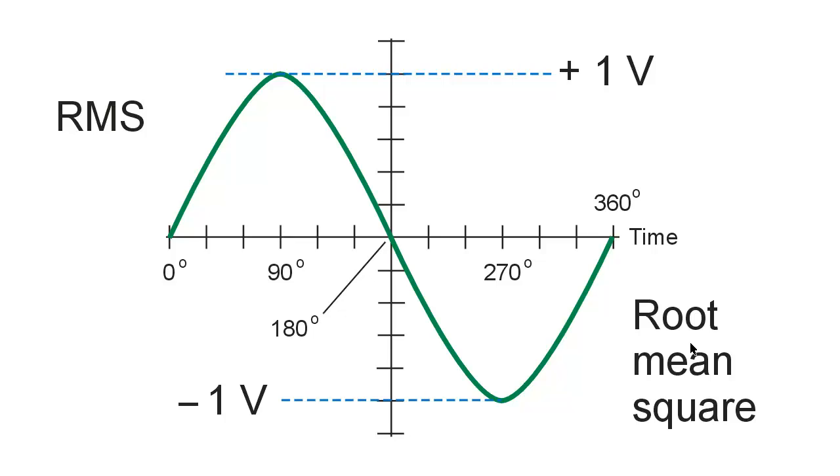RMS means root mean square. Where in the world does that expression come from you might wonder? Well, let's take a look at a very basic alternating current wave called a sine wave.